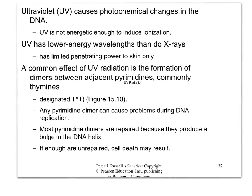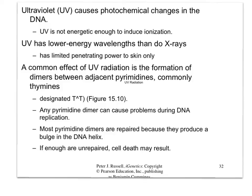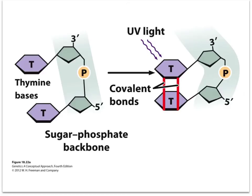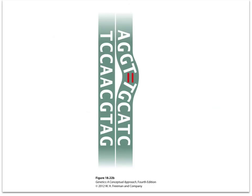We're going to talk a little bit about UV radiation and photochemical damage. It cannot induce ionization — it's not like an x-ray or ionizing radiation. X-rays penetrate down to bone, whereas UV is powered only through the skin. The biggest problem is thymine dimers, which are a covalent linkage between thymines. If these are paired, they cause a kink in the backbone of DNA, which can cause a stall in replication and cell death. This can also cause mismatches and mutations, so we don't really want that to happen.